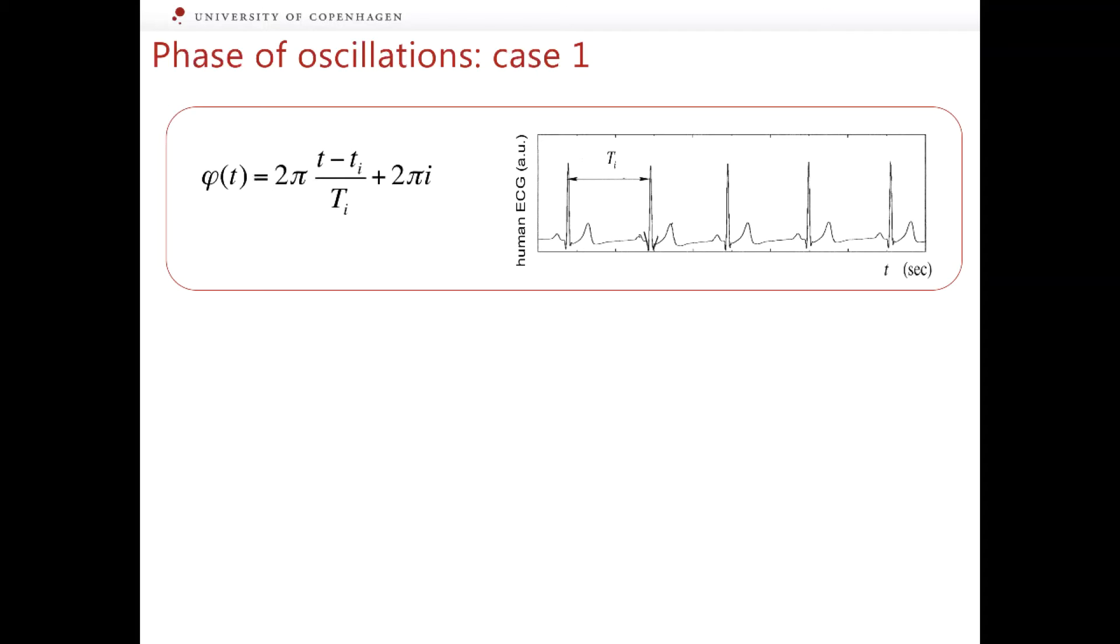Here, small t is time, small t number i is the moment when the i-th R peak occurs, and capital T_i is the inter-beat interval, which means the interval between the moments T_{i+1} and T_i. To find the phase of every new oscillatory cycle, we take the phase at the end of the previous cycle and add to it the volume by which it grew since the previous cycle finished.